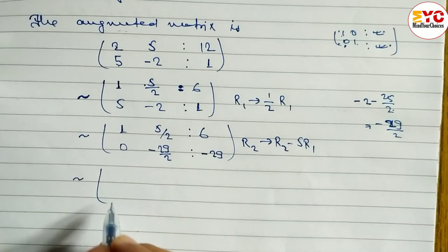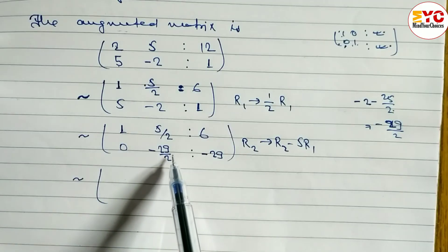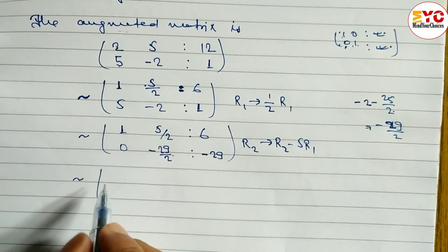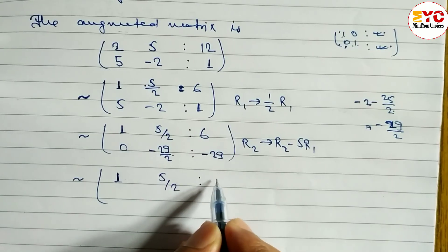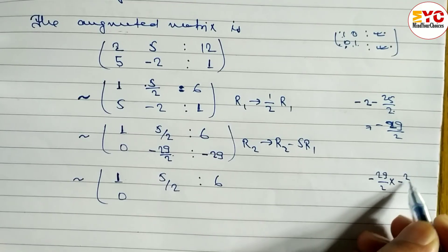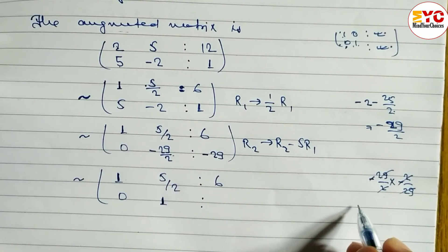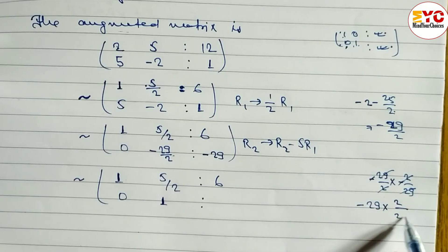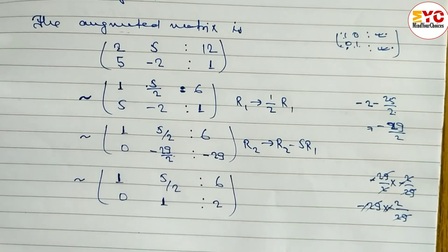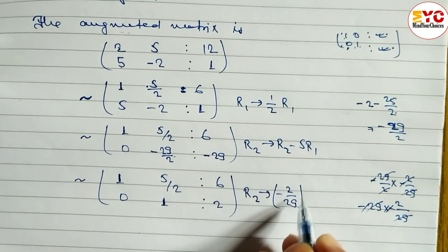Now next, we need 1 in the second pivot position. To get 1, we multiply row 2 by minus 2/29. When you multiply minus 29/2 by minus 2/29, the terms cancel — minus times minus is plus — so we get 1. For the constant: minus 29 multiplied by minus 2/29, the 29s cancel, and we get 2. So we write 2. The operation is R2 → minus 2/29 times R2.